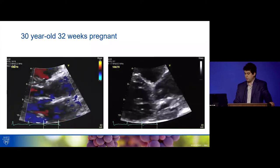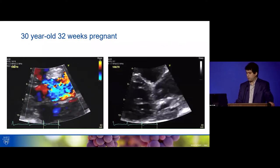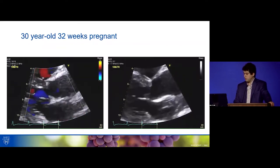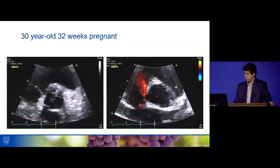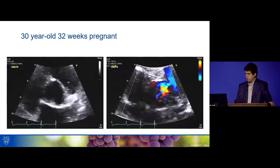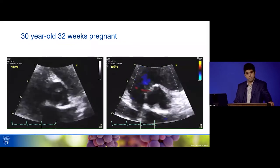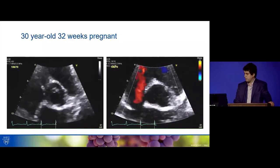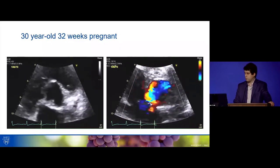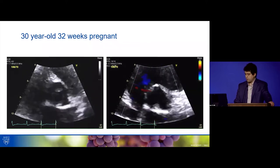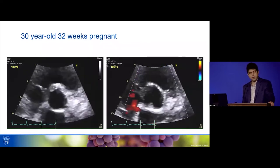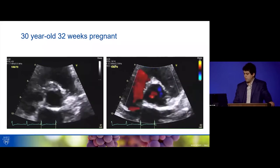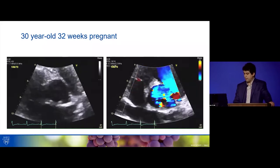Putting color Doppler on, you can see clear aliasing in keeping with outflow tract obstruction. Moving to the short axis, the valve morphology is a bit better. The first question was whether this was unicuspid or bicuspid — we agreed it was unicuspid, the most common version, with the only commissure between the non-coronary and left cusps: a unicommissure valve rather than a typical bicuspid aortic valve.